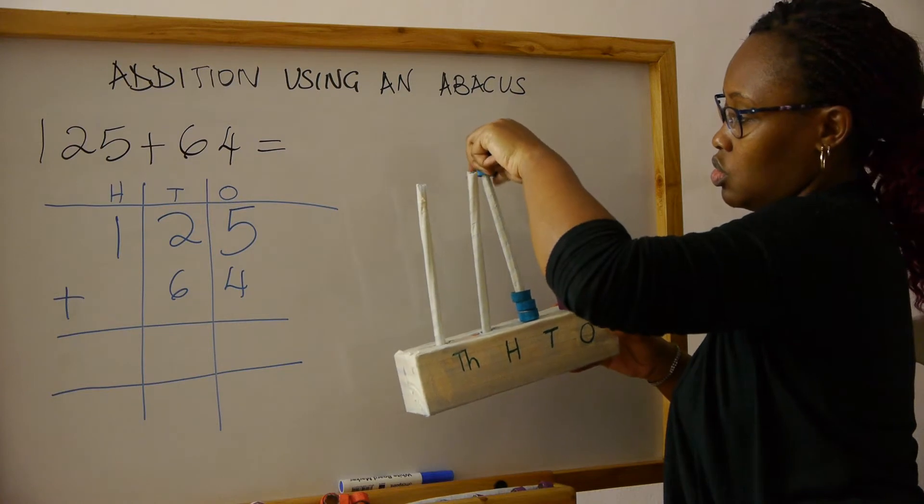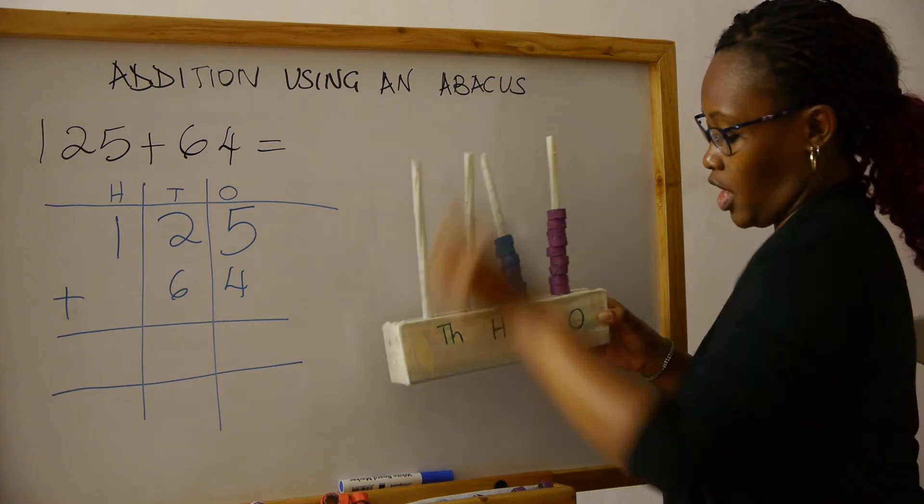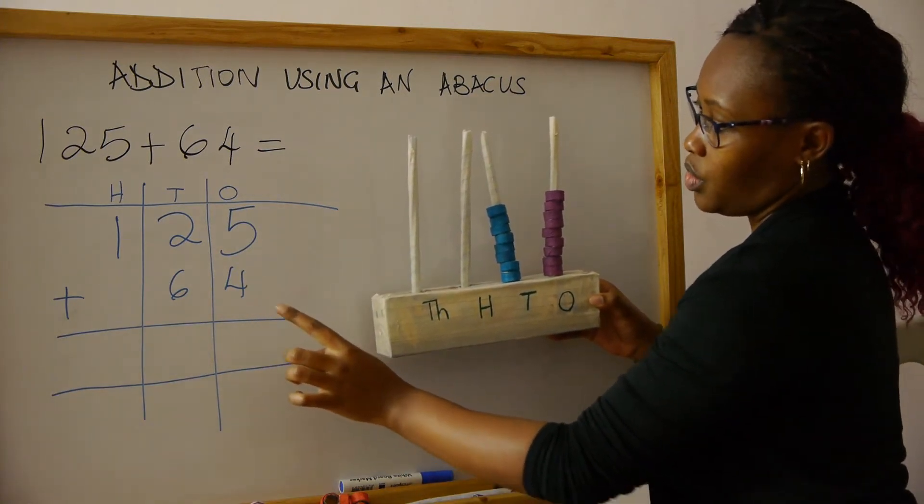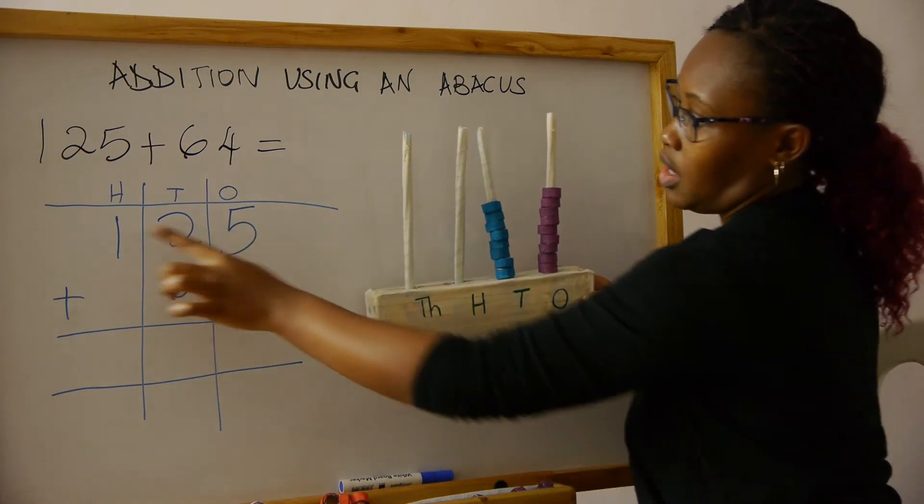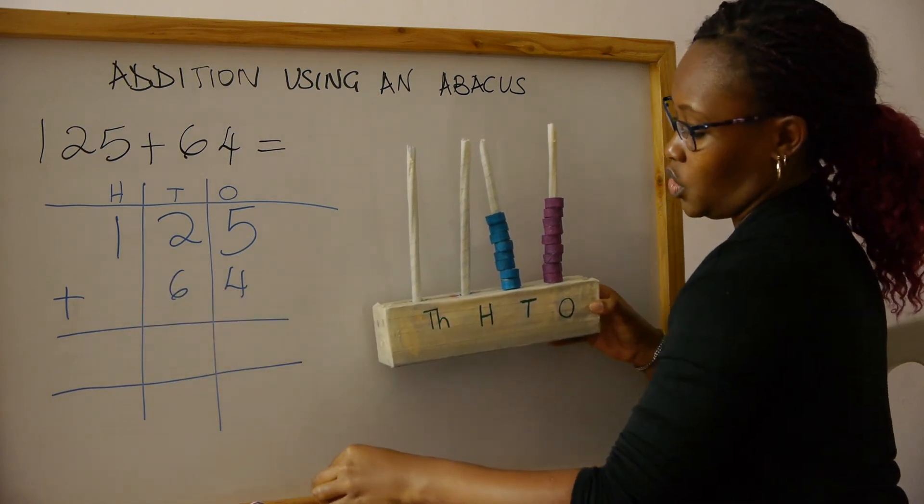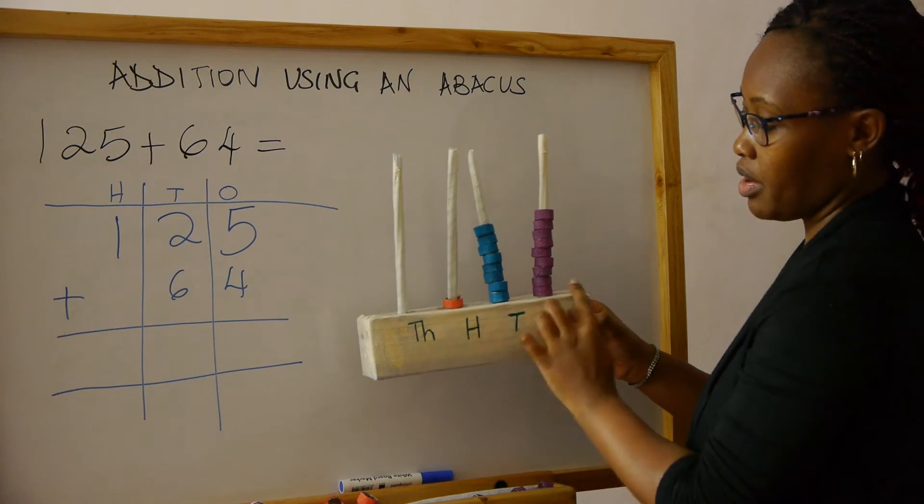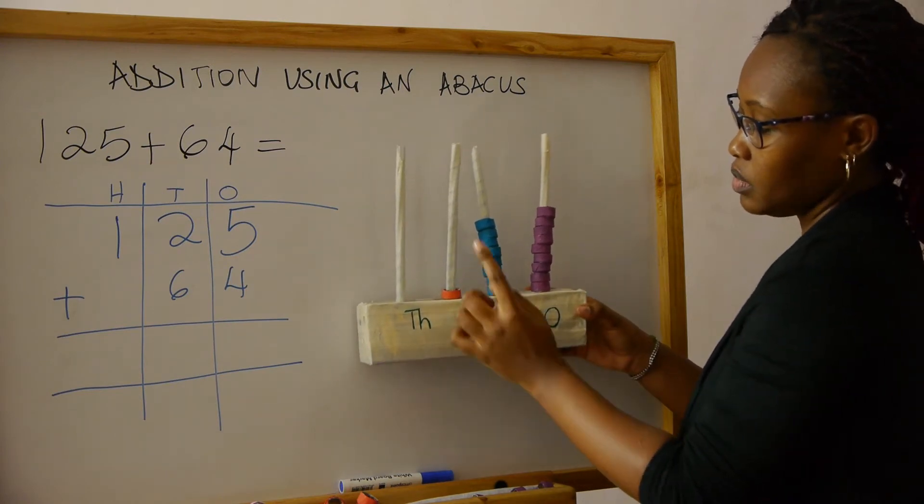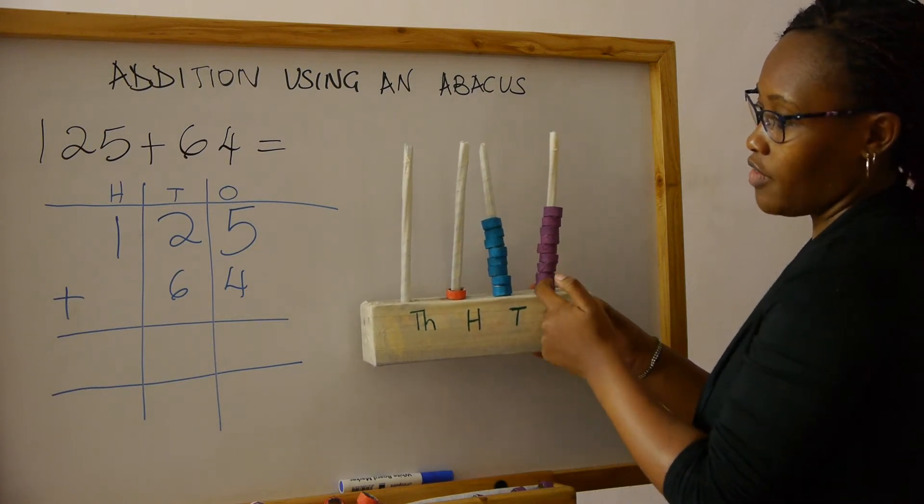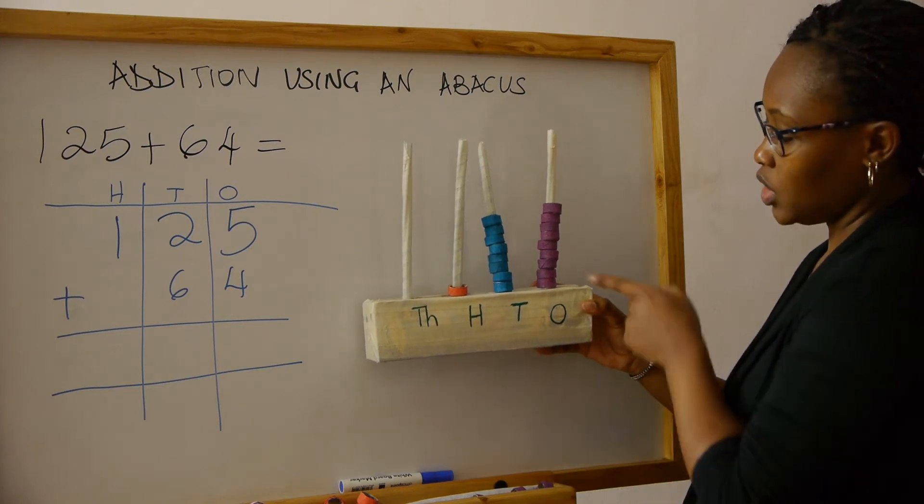One, two, three, four, five, six. Then now we go to the hundreds column. What is there? There's one, so we put one. Remember to use different colors so that you can remember that they're different.